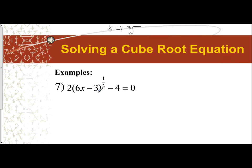And so the process, even though it's a different root, is the same. The idea is to isolate the object containing the variable first. And so the object that's containing my variable is this 6x minus 3 to the one-third power. I can't take the x out of this yet. I need to get this object isolated first. So the first thing I'm going to do is undo any addition or subtraction. So I'm going to move the 4 to the other side.